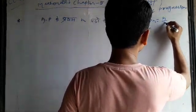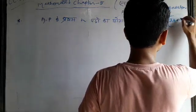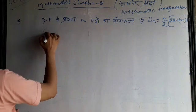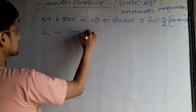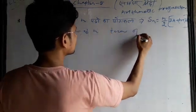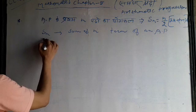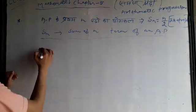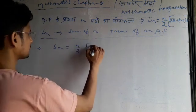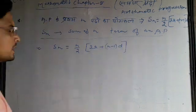Sn is equal to n by 2, 2a plus n minus 1, all into d. Sn is equal to n by 2, 2a plus n minus 1 all into d.